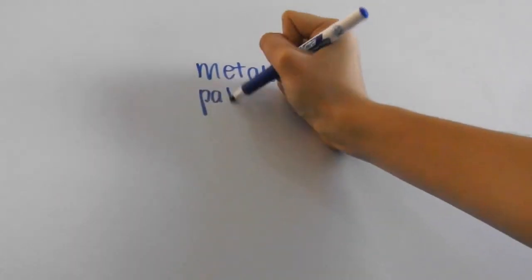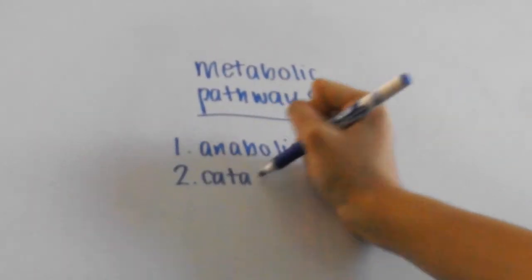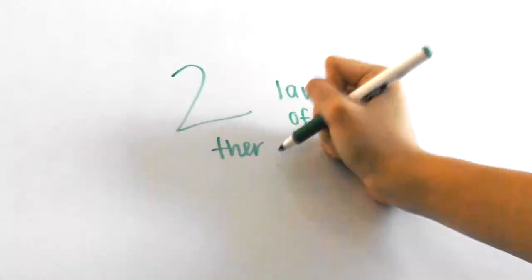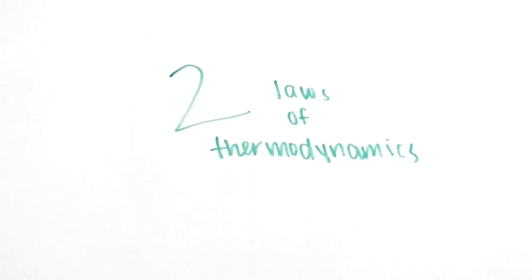So as a review, there are two types of metabolic pathways, anabolic and catabolic. In addition, there are also the two laws of thermodynamics. I hope you found this video useful, and be sure to check out my other AP Biology videos.